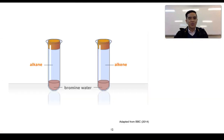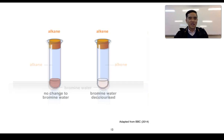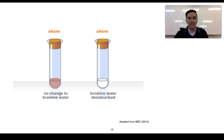On this slide we can see two test tubes — one contains an alkane, the other an alkene. We've added some bromine water to this mixture and by shaking the contents we can see that the alkane results in no observable change. However, the alkene causes the bromine water to become decolourised.